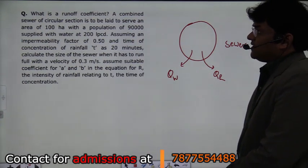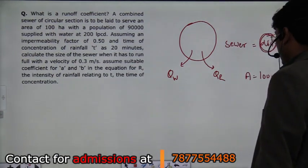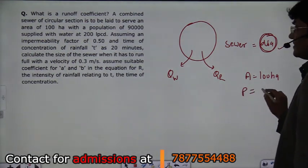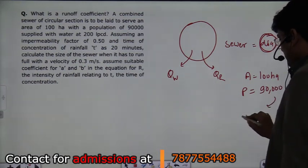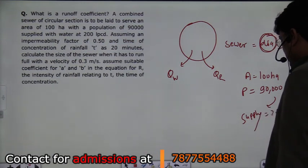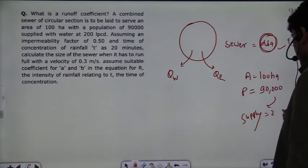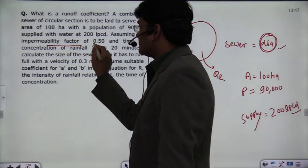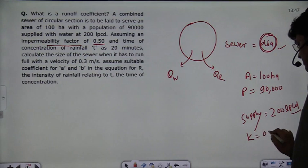The sewer is to be laid in an area of 100 hectares. The area given in the question is 100 hectares. The population given is 90,000. The water supply given is 200 liters per capita per day (200 LPCD). The impermeability factor — which is the same as the runoff coefficient — K is equal to 0.50.